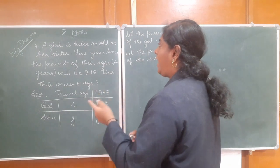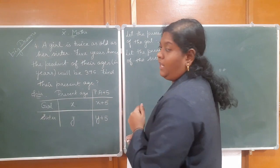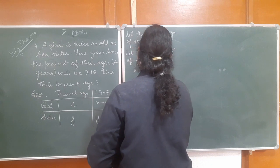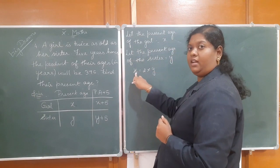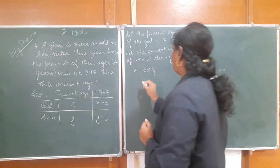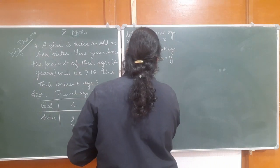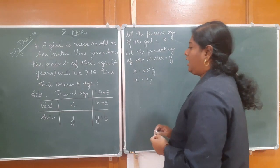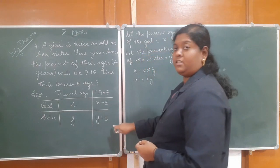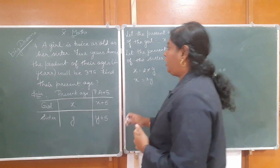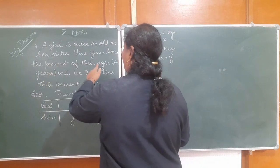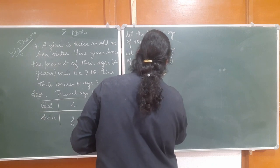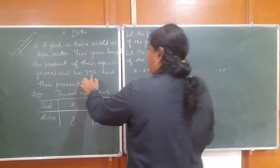A girl is twice as old as a sister, so x is equal to 2y. Now, the present age of the sister five years hence is equal to y plus 5. And x plus 5 into y plus 5 is equal to 375.